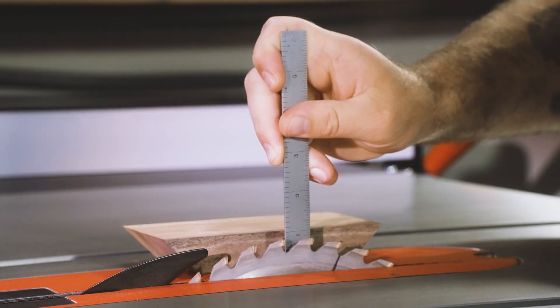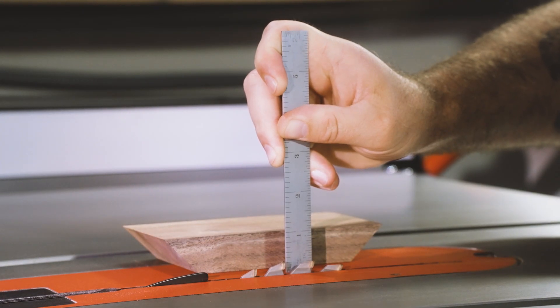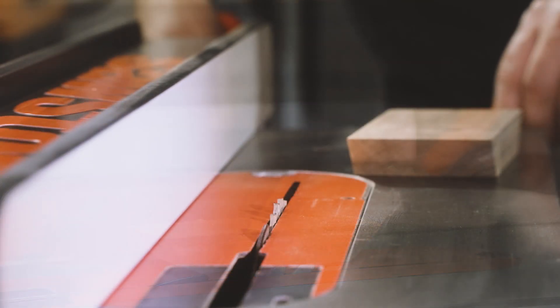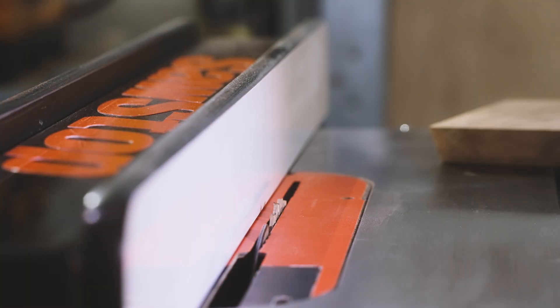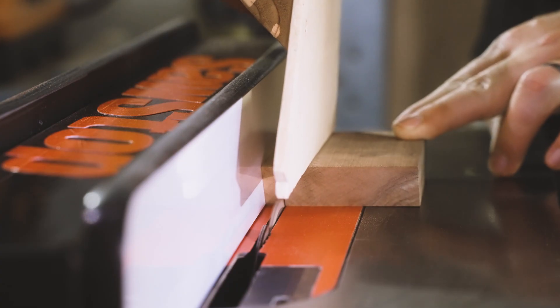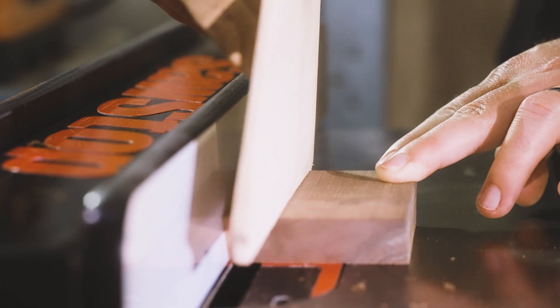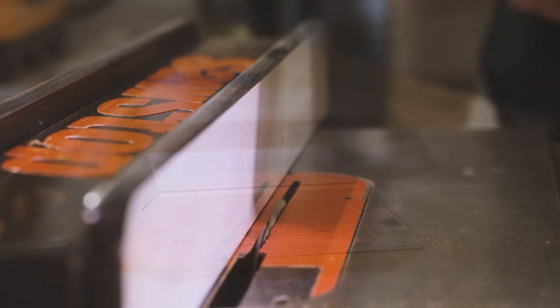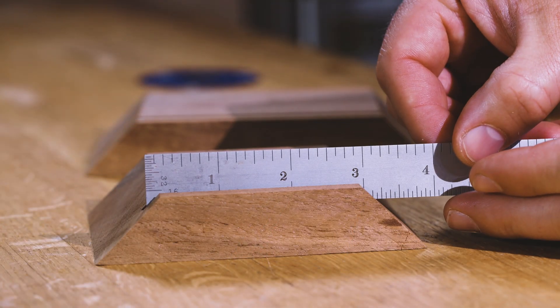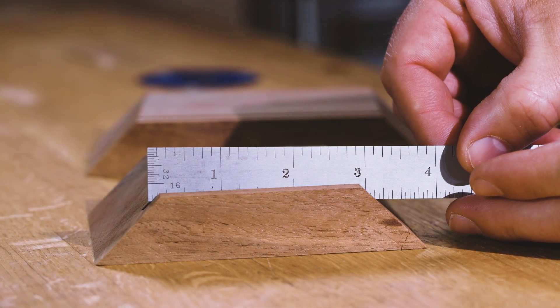We'll need a dado for the bottom of the box. So I'm lowering the blade down to about a quarter of an inch and setting the fence to about a quarter of an inch away from the blade as well.